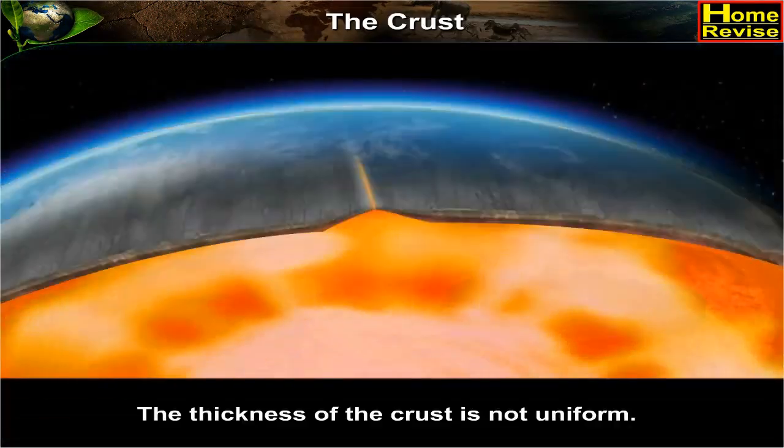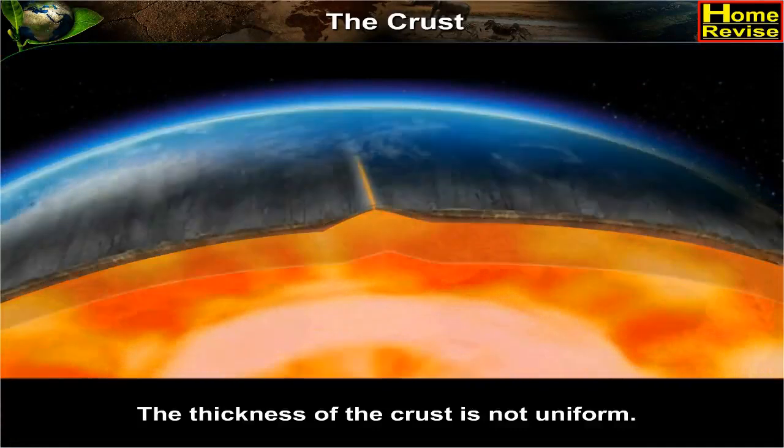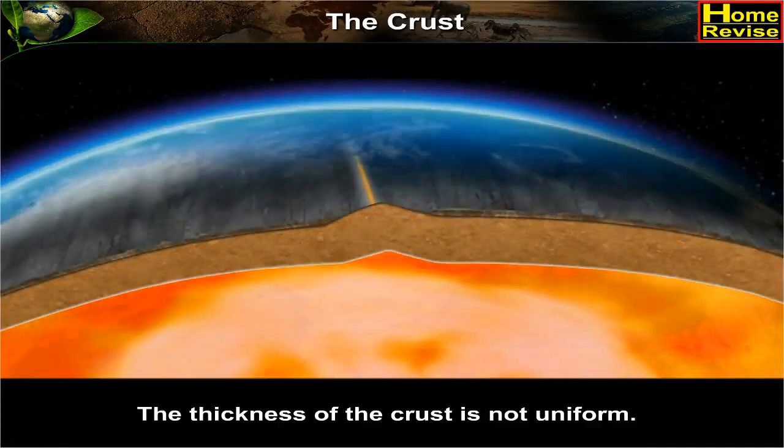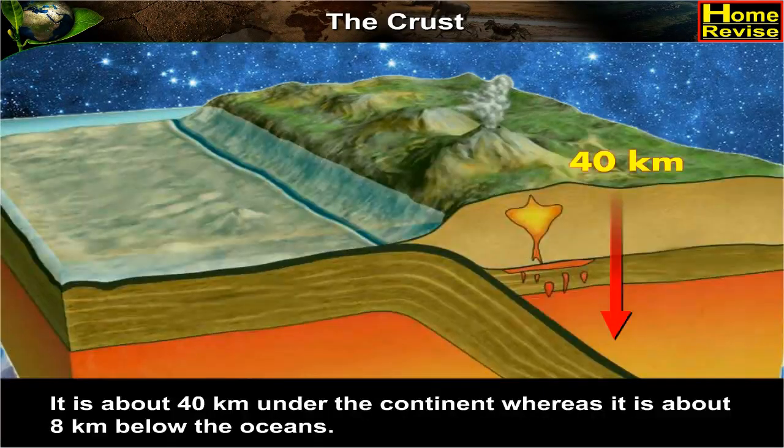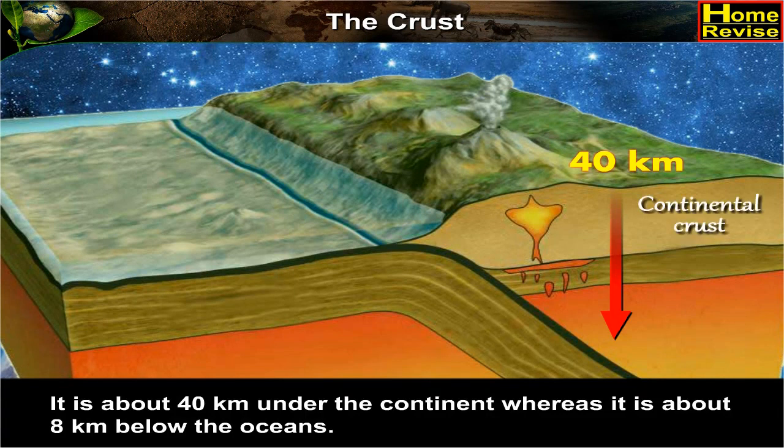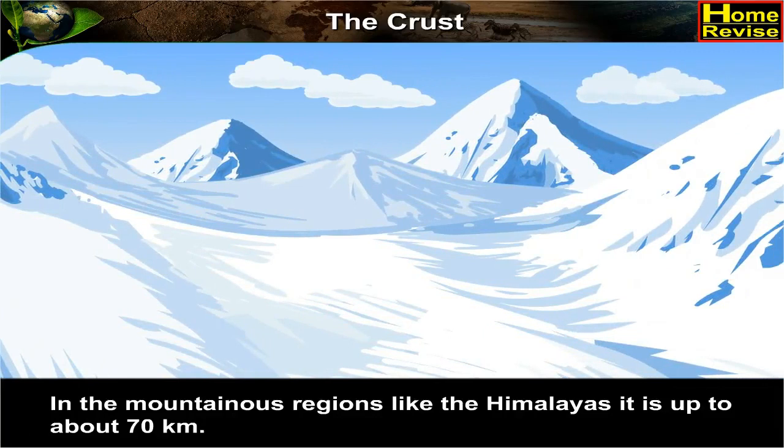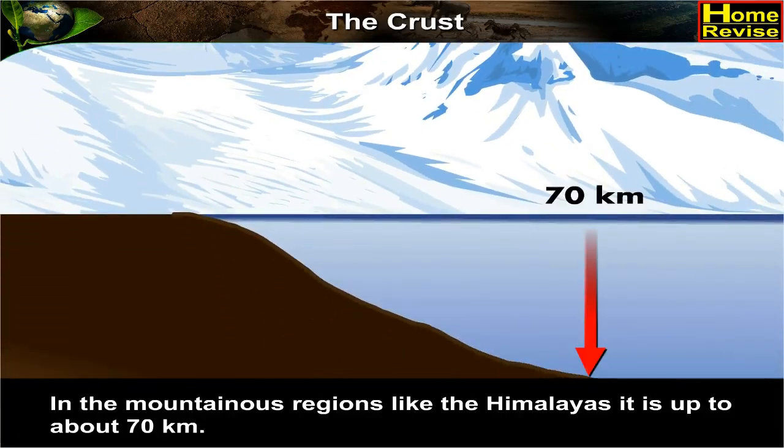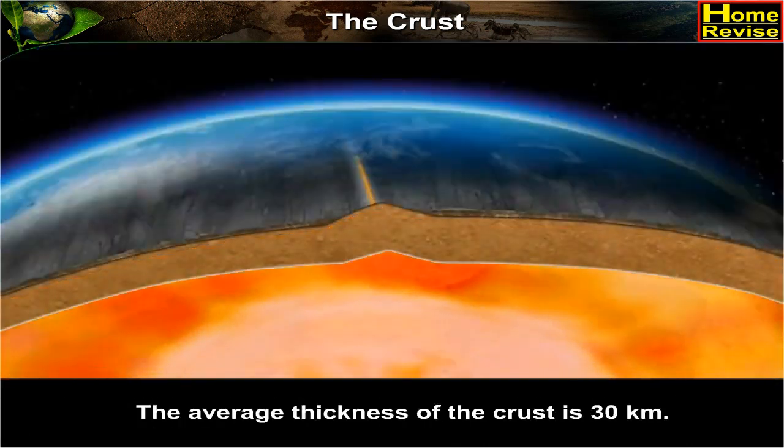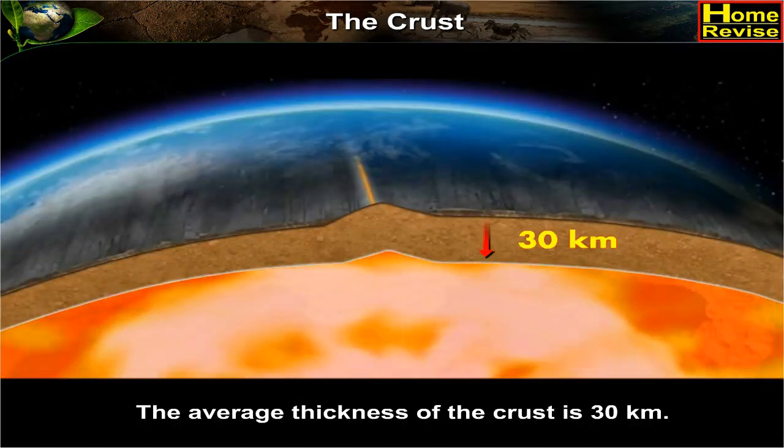The crust: The thickness of the crust is not uniform. It is about 40 kilometers under the continent, whereas it is about 8 kilometers below the oceans. In the mountainous regions like the Himalayas, it is up to about 70 kilometers. The average thickness of the crust is 30 kilometers.